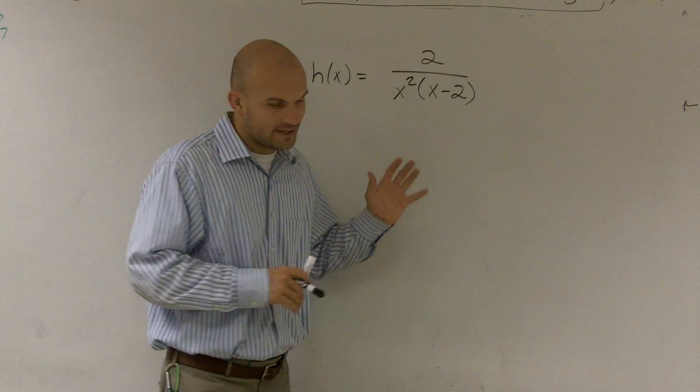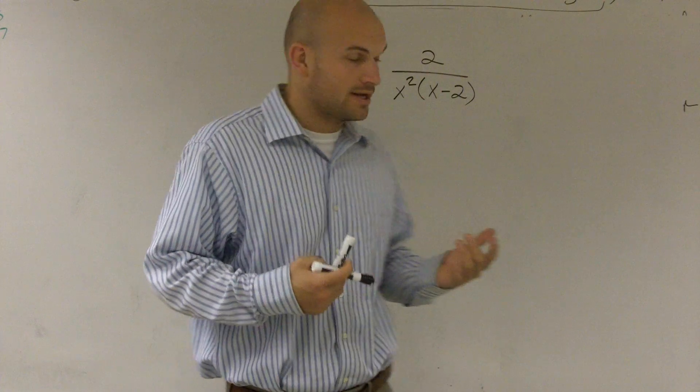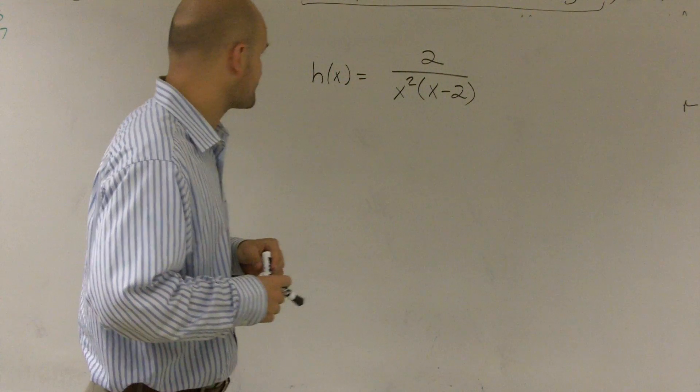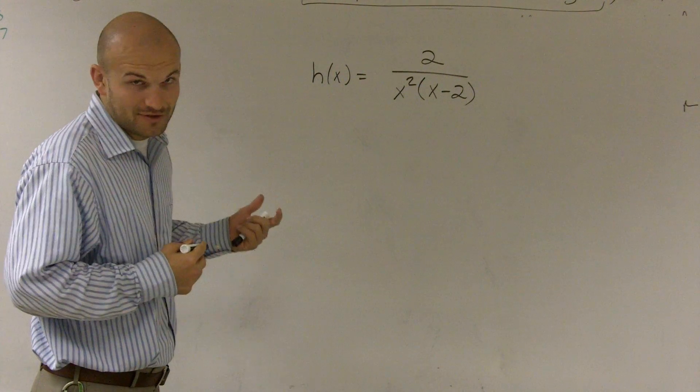All right, what I'd like to do is show you how to find the asymptotes of a problem like this, of a function, rational function.